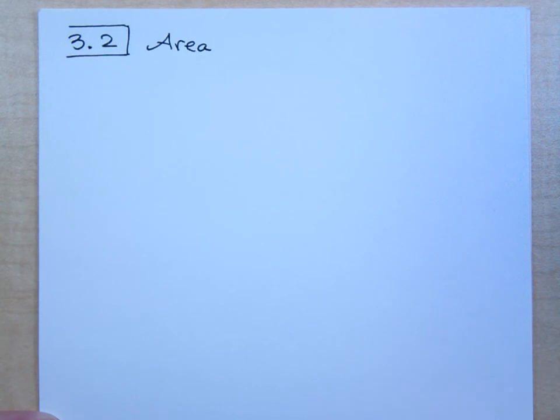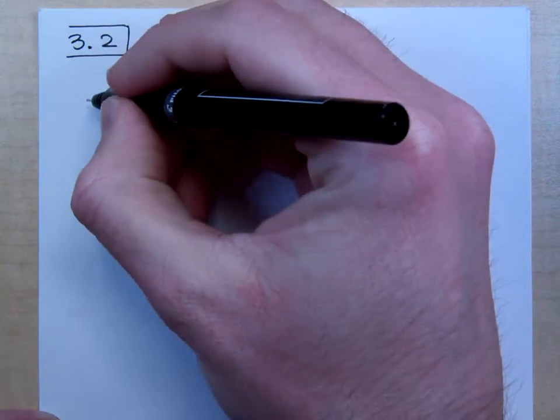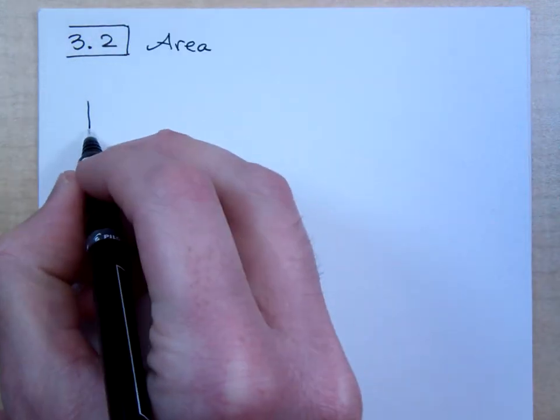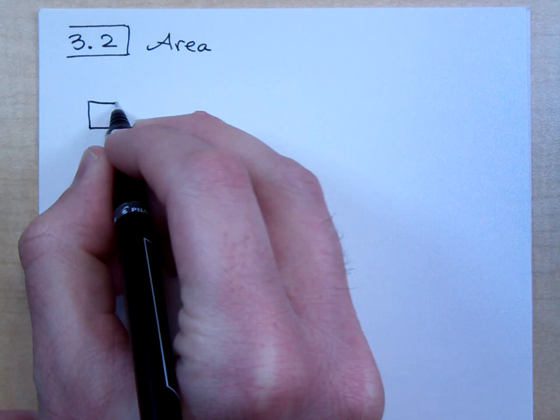So, this next section, we just talked about perimeter, now we're going to talk about area. Now, area, before we can even get to that, we need to understand a little something about area.